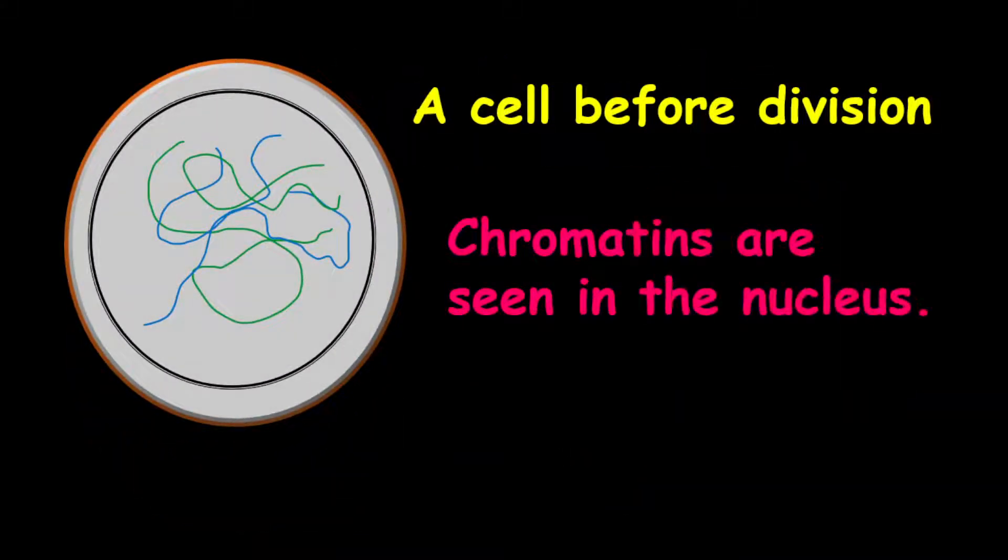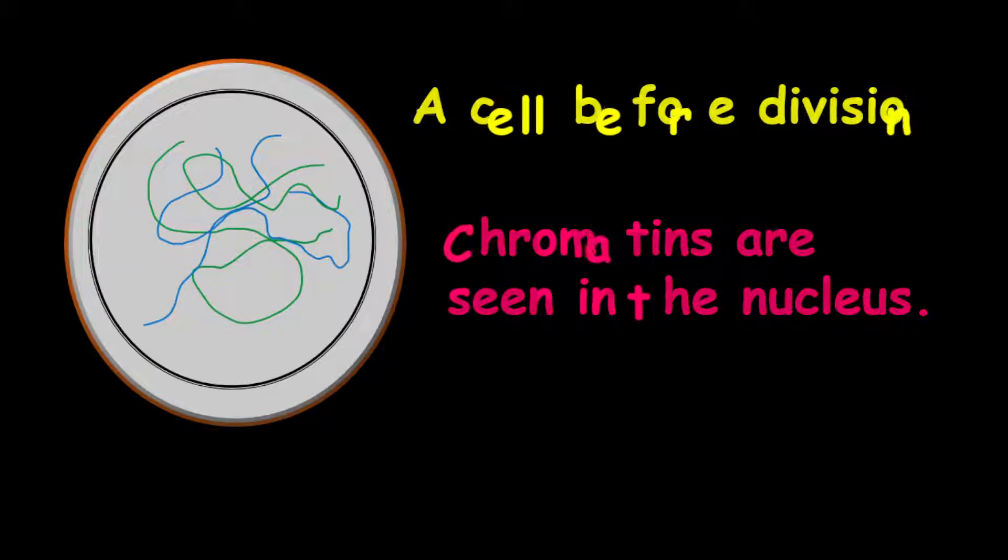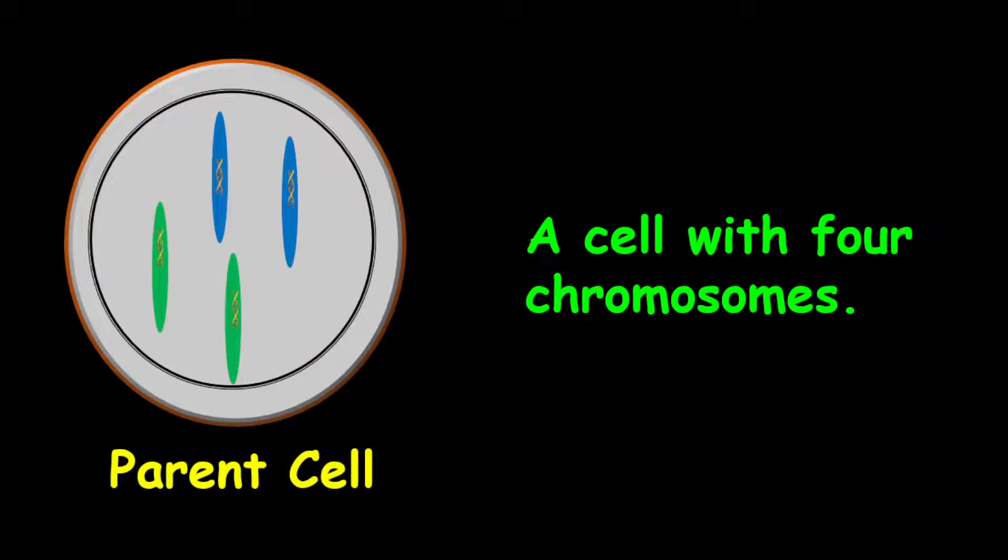A point to remember is that before a cell starts to divide, what you will see in the nucleus are chromatins, not chromosomes. Now, for today's example, we're looking at a parent cell containing four chromosomes.